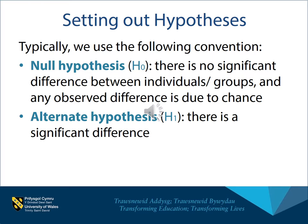The typical way that hypotheses are worded gives us two options. The null hypothesis, given the symbol H0, states that there is no significant difference between the individuals and the groups, and any observed difference is merely due to chance. In the case of the cars, your null hypothesis would be that there is no significant difference between the lifespan of your chosen car and cars in general. The alternate hypothesis, H1, is that there is a significant difference between the two groups or categories in which you're interested.